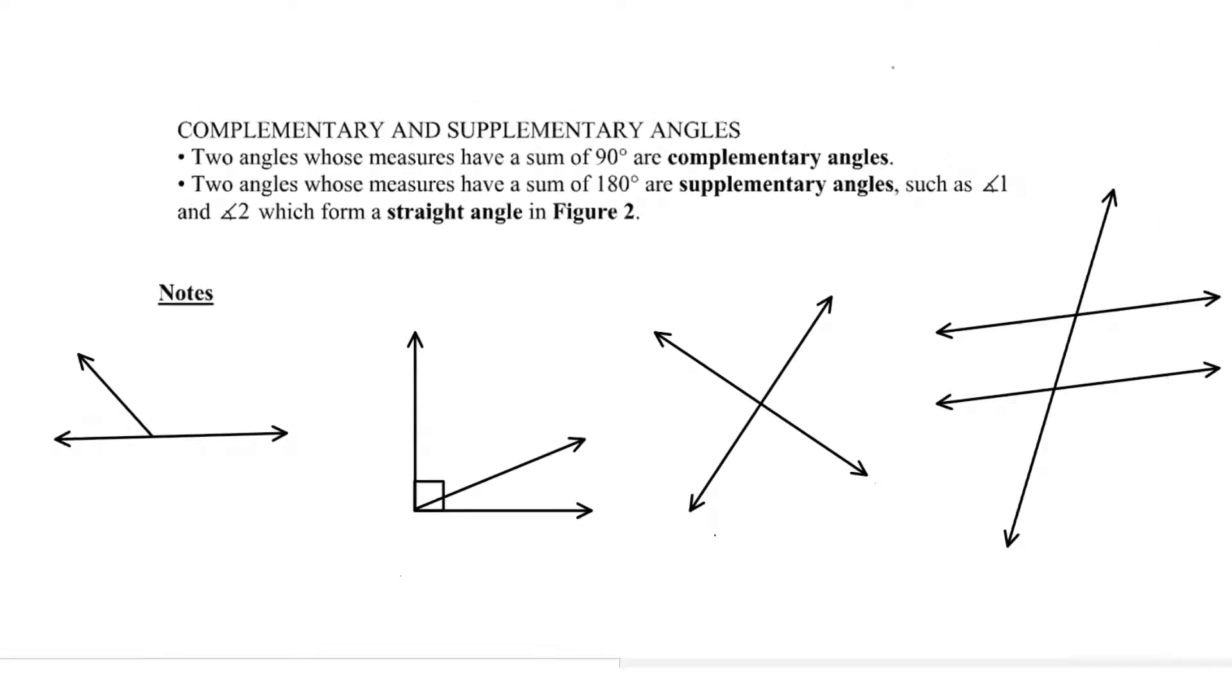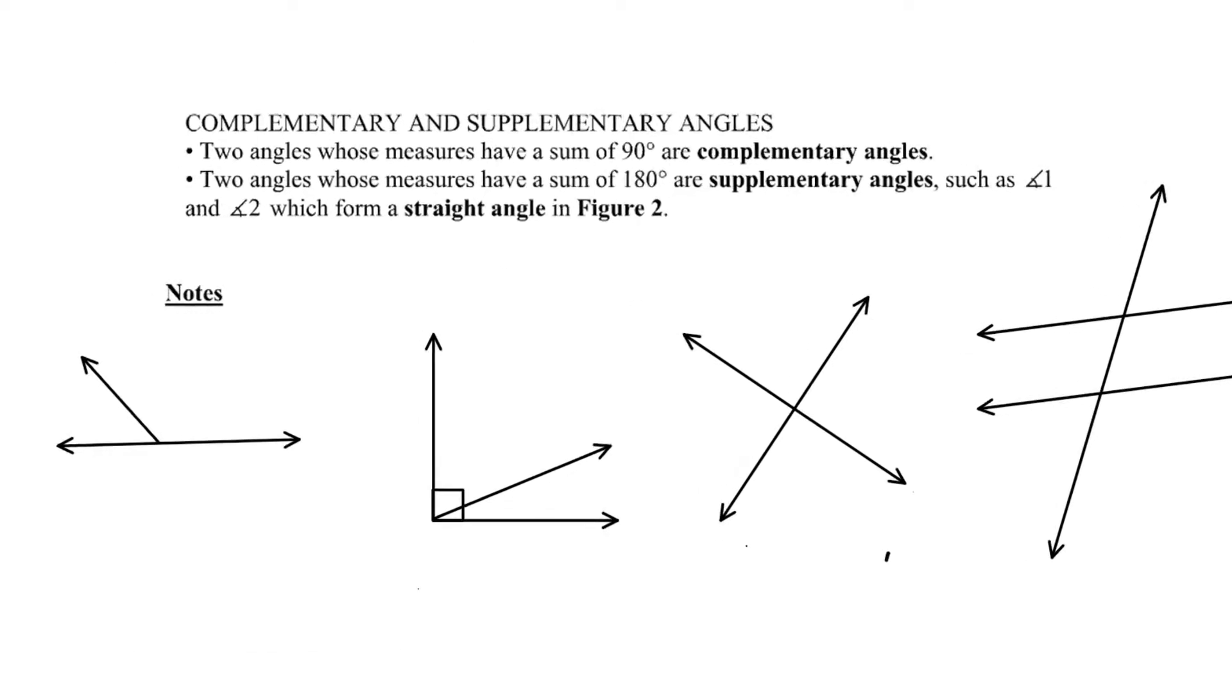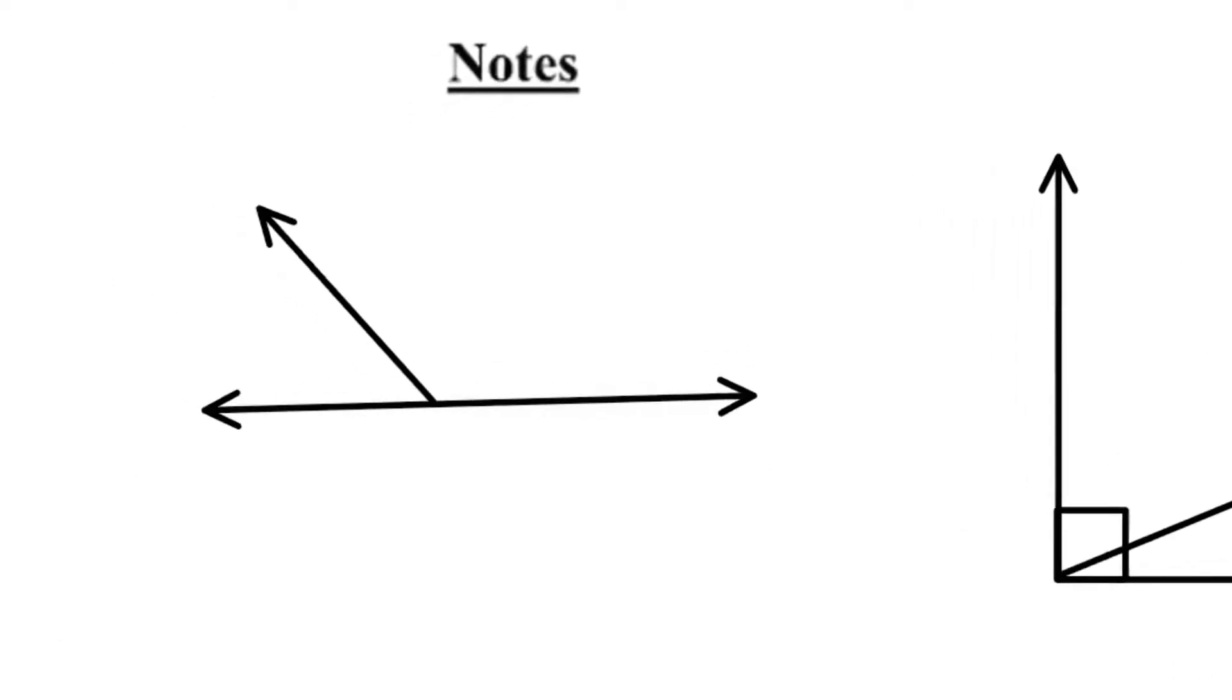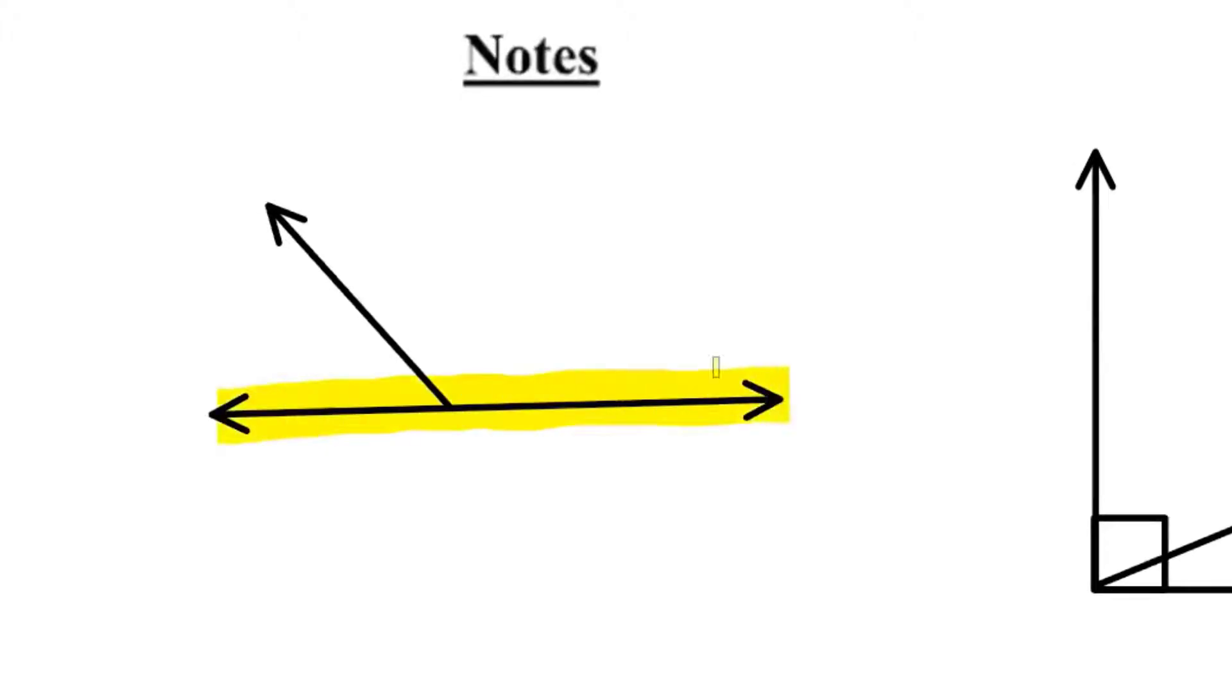For example, on the left, the first figure on the left over here, notice that we have a straight line and then coming off of that straight line, we have a ray. So this forms how many different angles that you can see.